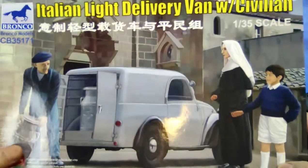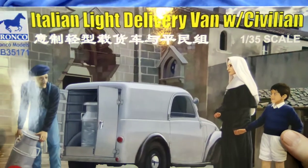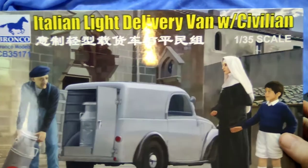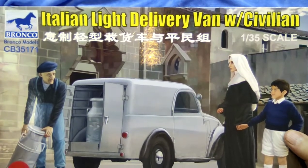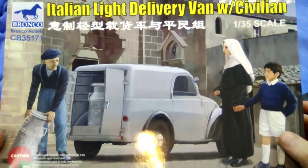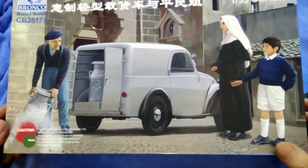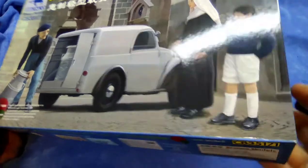Now they say light delivery van, we all know it's a Topolino. They obviously didn't get the license from Fiat, so they called it an Italian light delivery van. So it is a Topolino, a little Topolino van, very nice.